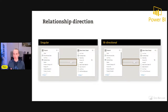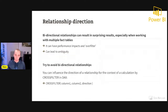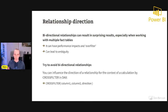The first direction is singular, where the filter only flows from the one side to the many side. The second is bidirectional — also known as both — where the filter can flow in both ways. Bidirectional relationships can result in surprising results, especially when working with multiple fact tables. Think about applying a filter to one fact table that simultaneously adds a filter to another fact table, leading to bad performance and over-filtering.